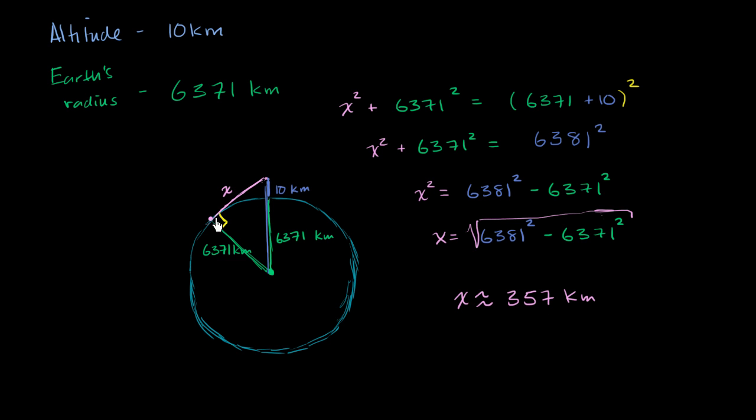So you could see 357 kilometers in that direction. You could see 357 kilometers in that direction. So if you were looking at a map, let's say you're looking at a map of the US, and your plane is flying across it, and this is kind of neat.